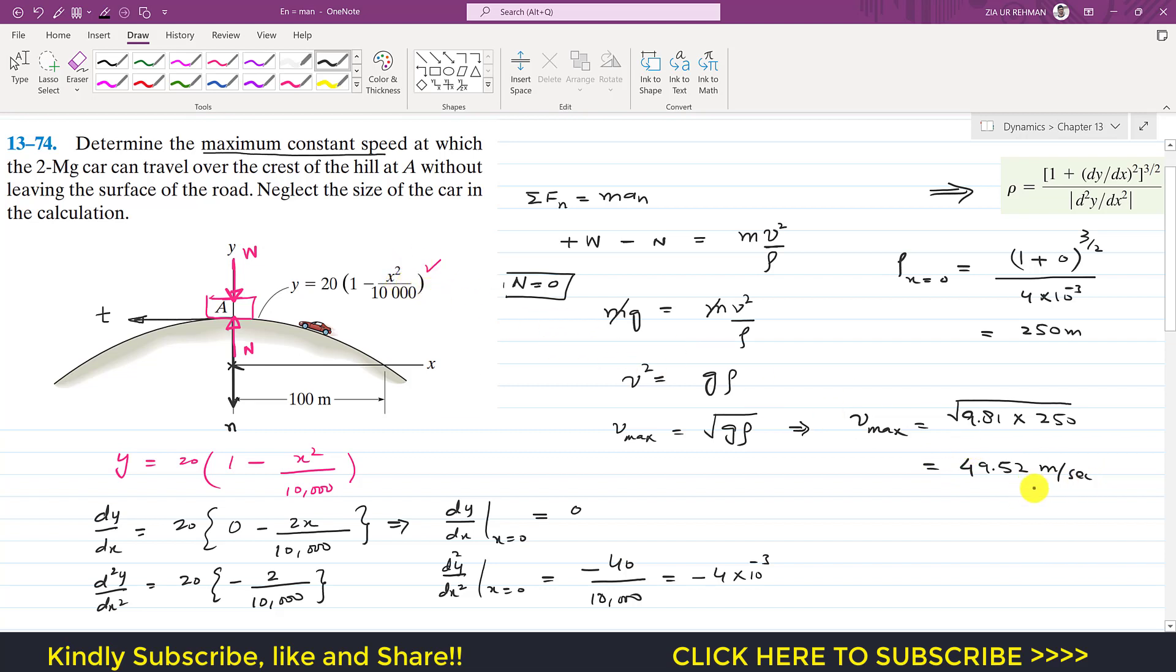So if the car is going to move with 49.52 meters per second, it will only have, its wheel will just lose the contact at that point A. So this is the solution of this particular problem.